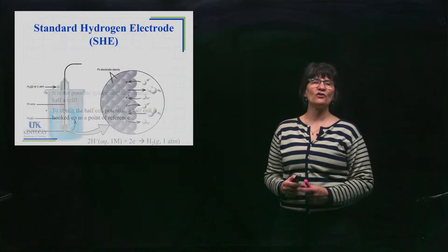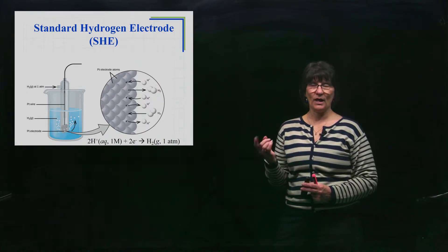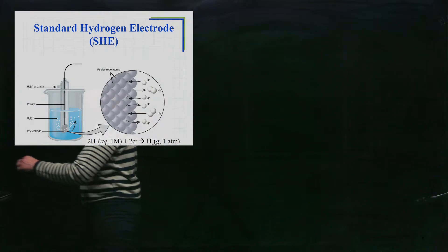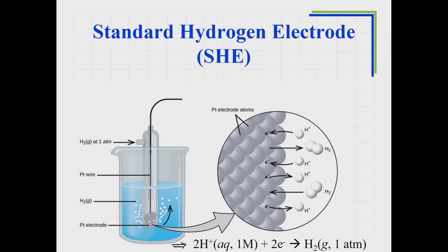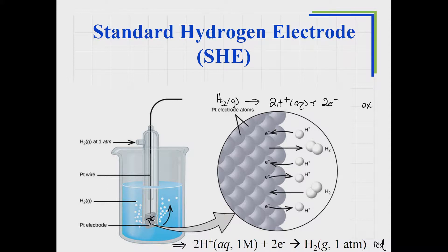This half cell is called a standard hydrogen electrode, or SHE. Looking at the image: the reaction is written as a gaining of electrons, so this is a reduction. But this half cell could just as easily be written in the opposite direction. There is a piece of platinum inside the solution with hydrogen gas flowing over it. The platinum is not part of the reaction — it just allows for the interface for the flow of electrons in or out.